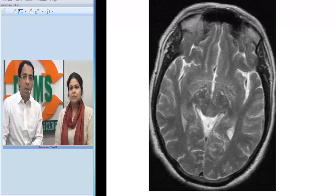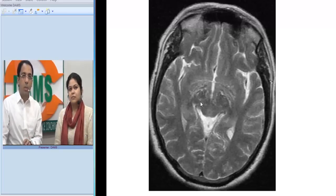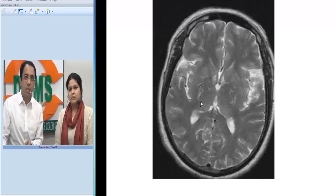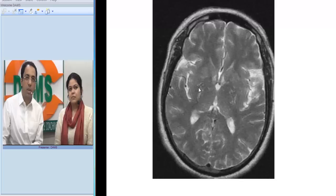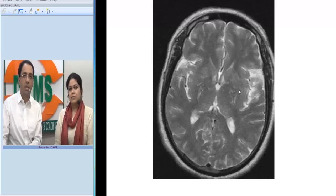Looking at another image at a higher level, at the level of the basal ganglia, you can see these tiny microcystic changes. Let us now try to put everything together that we have seen.